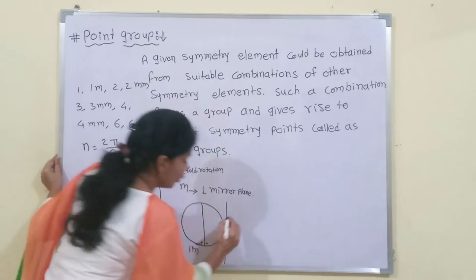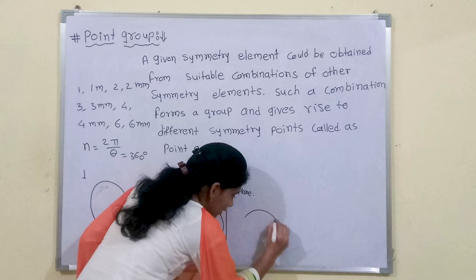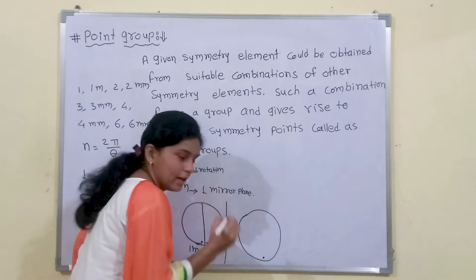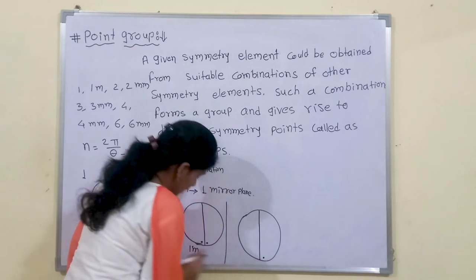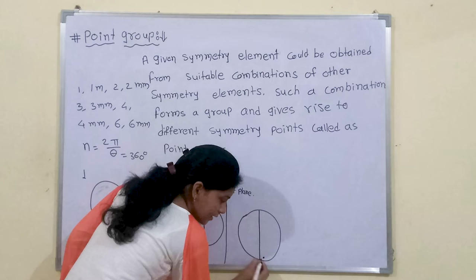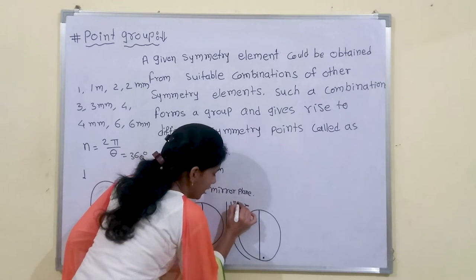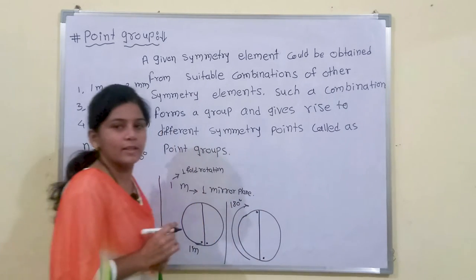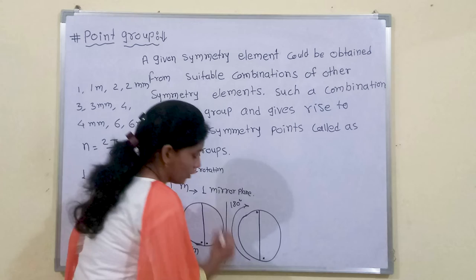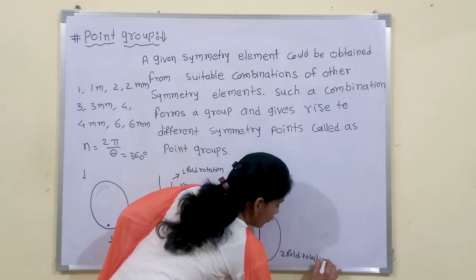For '2', we draw a circle with 1 lattice point and a rotation axis. If we rotate this lattice point by 180 degrees, we get a similar lattice point in the opposite direction from the rotation axis. This is called 2-fold rotation.